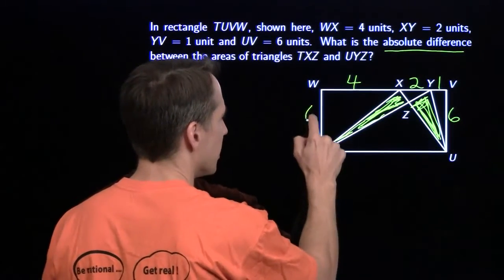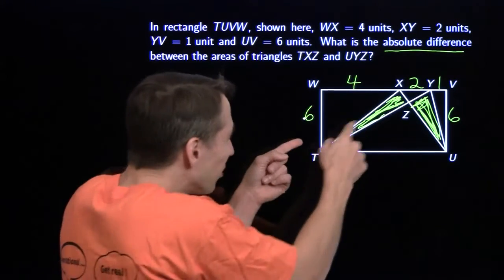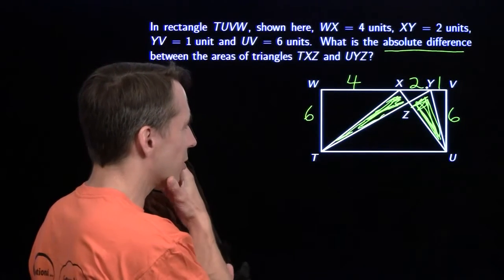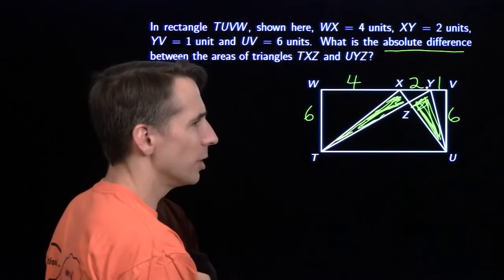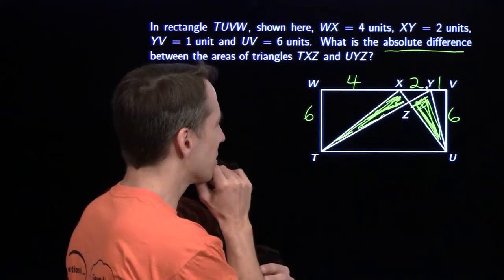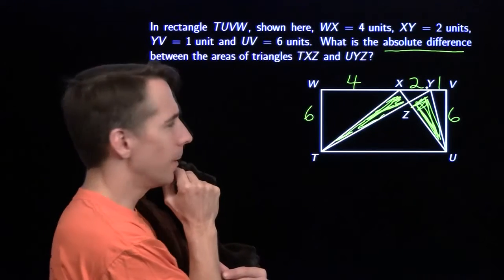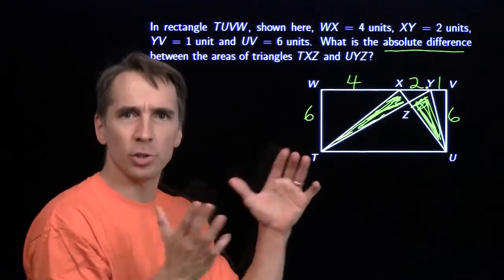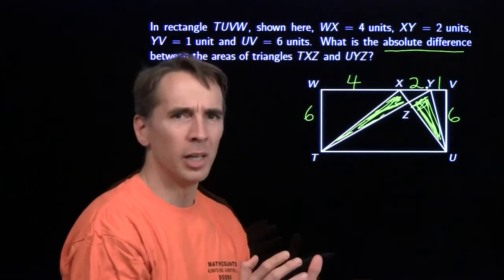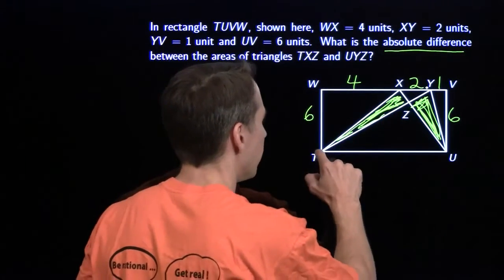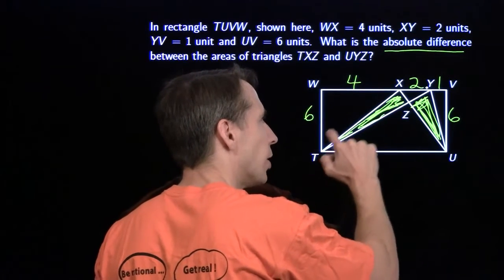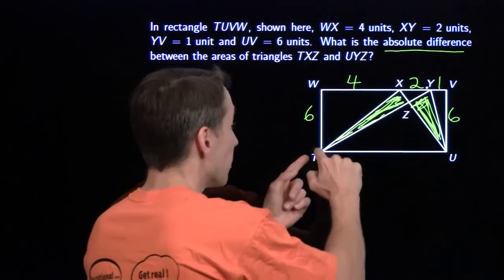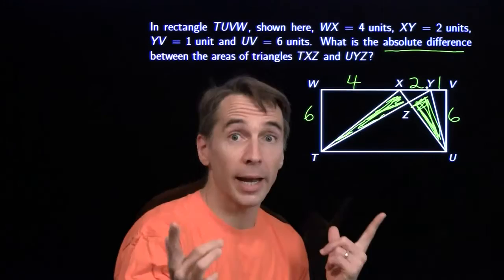That side is 6, which means this is 6. I don't have any side lengths right away, but I can find UY using the Pythagorean theorem — but then I have to find some altitudes and I don't know how to do this. They're part of something bigger. Each of these little triangles is part of something bigger. This TXZ is part of this larger triangle TXU, so I could find the area of TXZ by first finding the area of the larger triangle TXU.